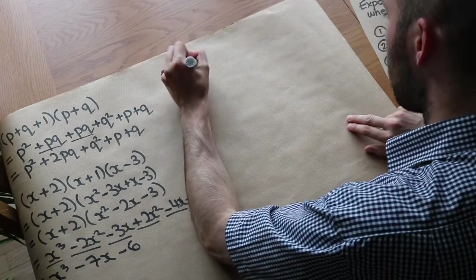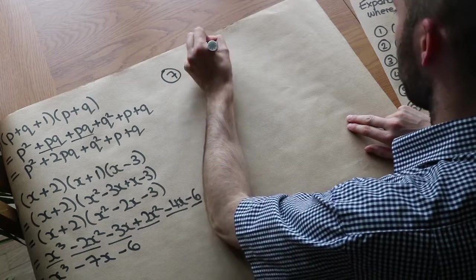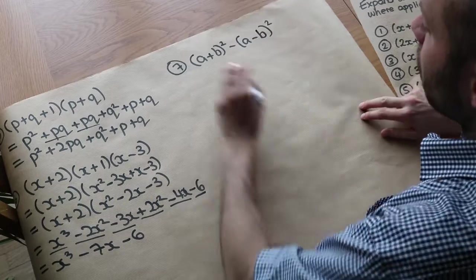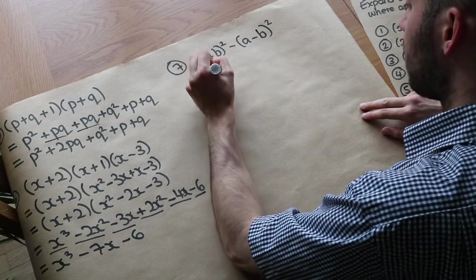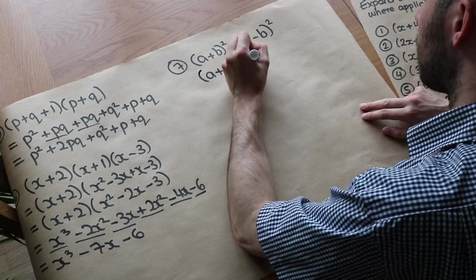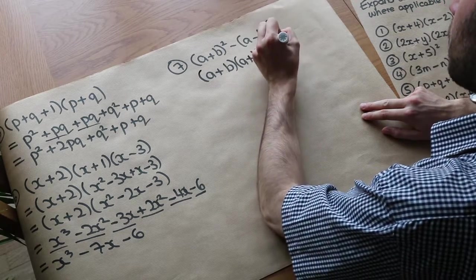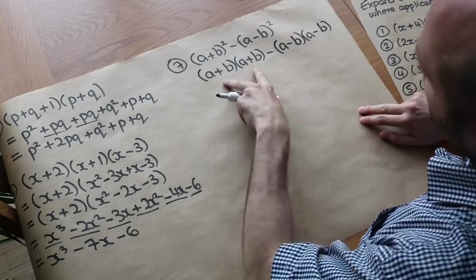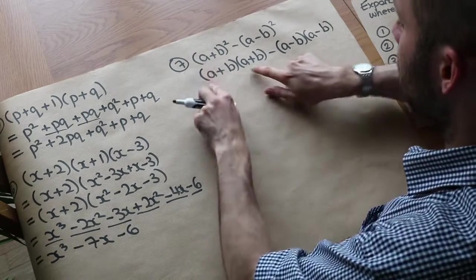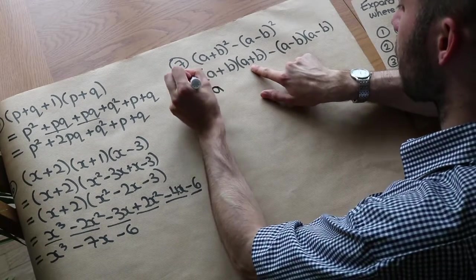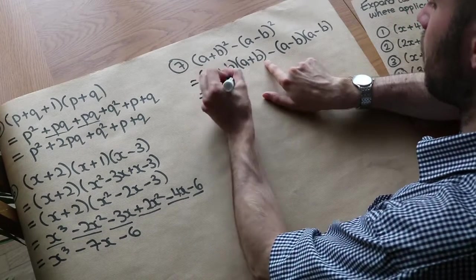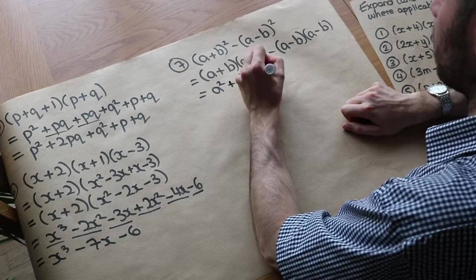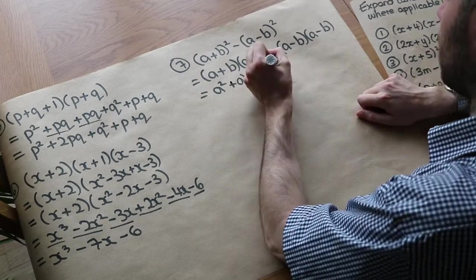Now let's do (a + b) squared minus (a − b) squared. Write out the brackets twice because that's what squared means. So we've got (a + b)(a + b) minus (a − b)(a − b). Expanding the first pair: a times a is a squared. a times b is ab. b times a is ab. And b times b is plus b squared.